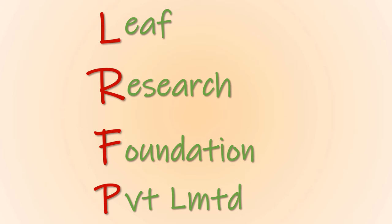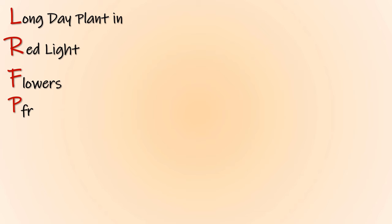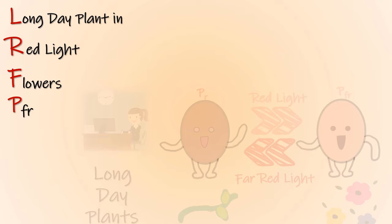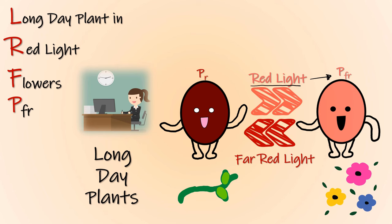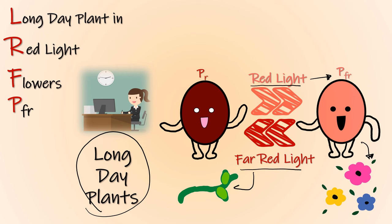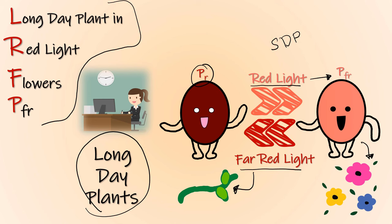A trick to remember this is by remembering the phrase 'LEAF Research Foundation Private Limited.' This means that long day plants in the presence of red light will give flowers due to the Pfr form. Looking at this arrangement from the bottom, we see P, F, and R, reminding us of the Pfr form. So red light gives the Pfr form which induces flowering in long day plants, while far-red light prevents flowering via the Pr form. The exact opposite applies to short day plants.